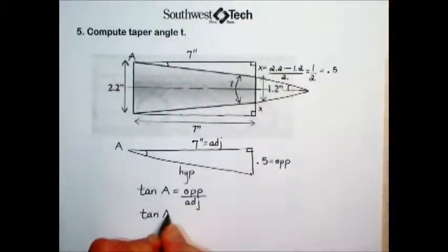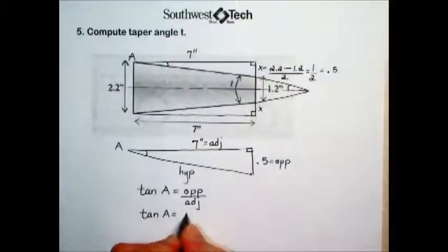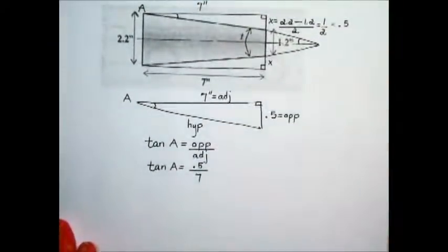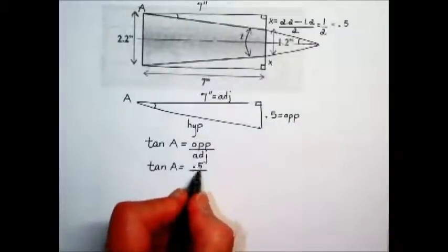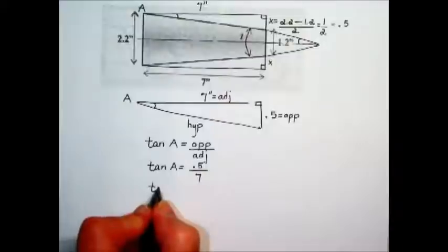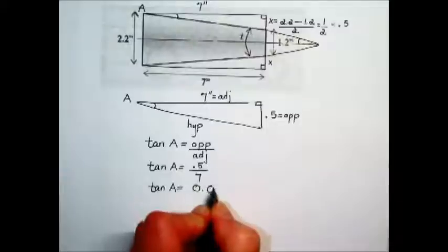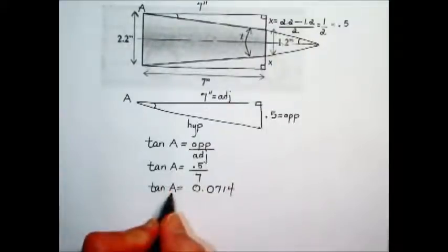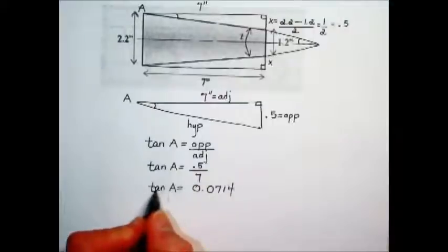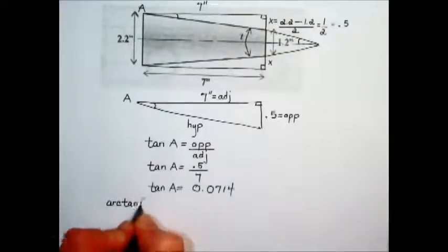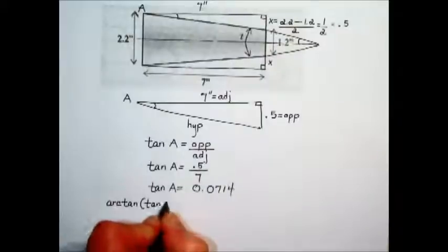Tangent of an angle is equal to the opposite side length over the adjacent side length in a right triangle. We don't know the angle measurement. The opposite is half an inch. The adjacent is 7 inches. Simplifying that fraction by taking the numerator 0.5 divided by 7 gives us a decimal value of 0.0714. We want to have the angle measurement by itself. So, to undo the tangent, we'll take the inverse or the arctangent of tangent of our angle.